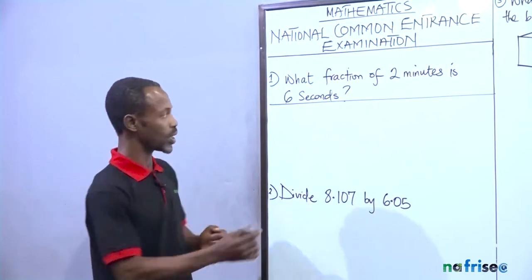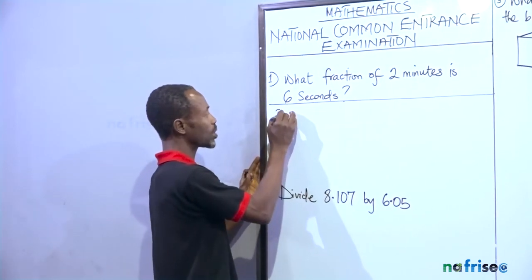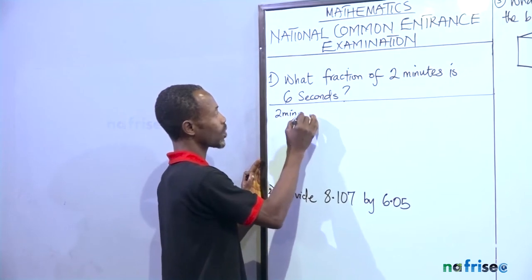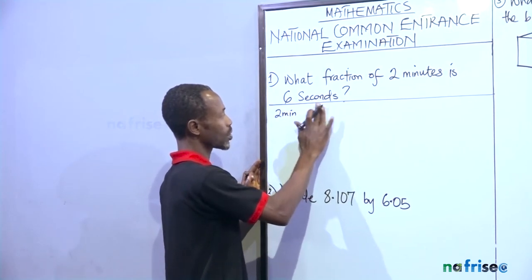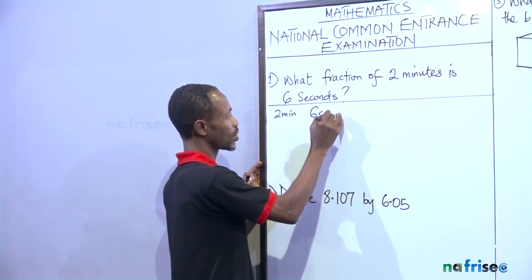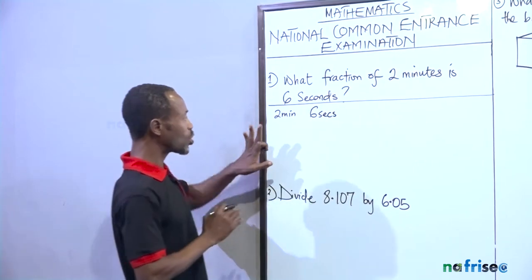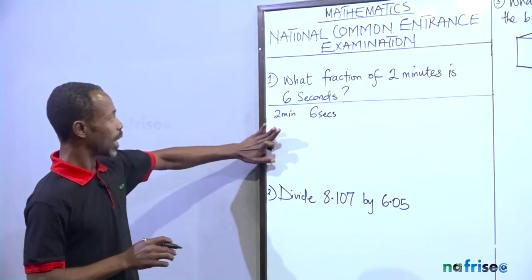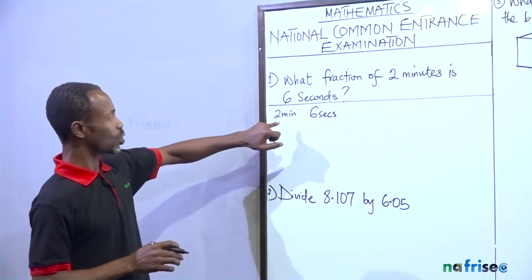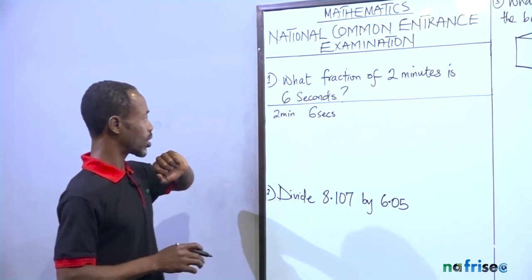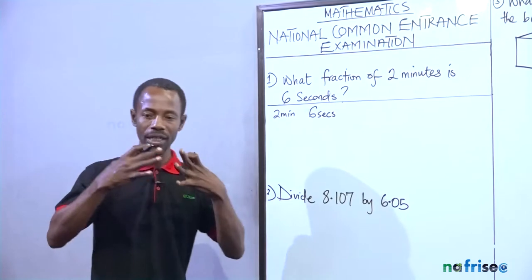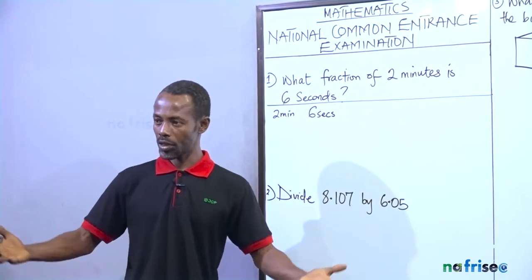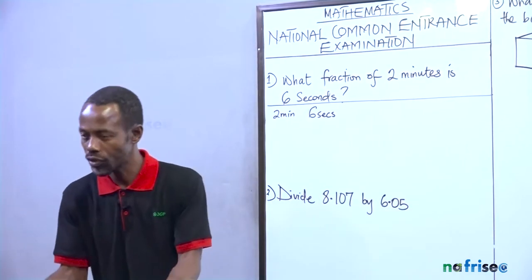all of them to the same units. I'm going to show you the two ways of doing it. You have 2 minutes and you have 6 seconds. So what you do is this: What fraction of 2 minutes is 6 seconds, you change this 2 minutes to seconds so that they will be in the same denominators.